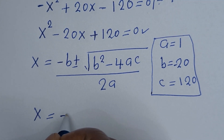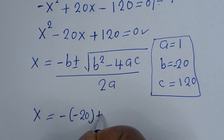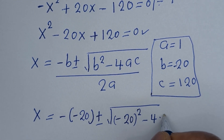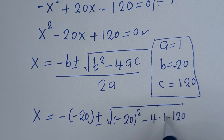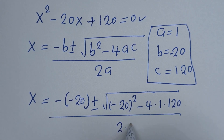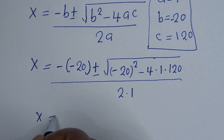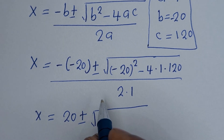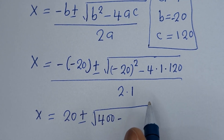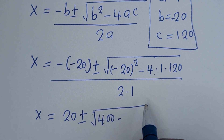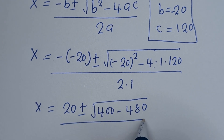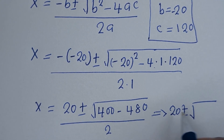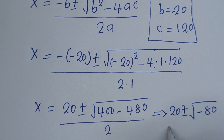So x equals minus (minus 20) plus or minus the square root of (minus 20) squared minus 4 times 1 times 120, all over 2 times 1. This gives 20 plus or minus the square root of 400 minus 480, over 2. That is 20 plus or minus the square root of minus 80, over 2.